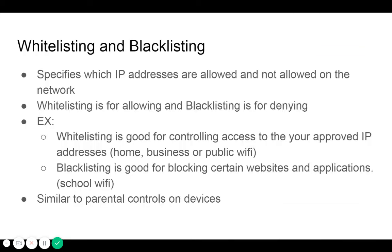Whitelisting and blacklisting specify which IP addresses are allowed and not allowed on a network. Whitelisting is for allowing access and blacklisting is for denying access. Whitelisting is good for controlling access to approved IP addresses — useful for home, business, and public Wi-Fi situations.